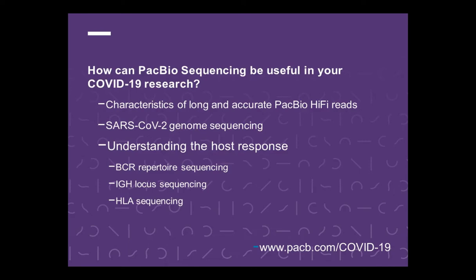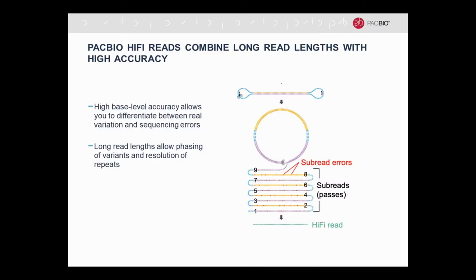How is PacBio sequencing potentially helpful in your COVID-19 research? I want to start out by describing some of the unique qualities of PacBio HiFi reads, and then go into more details about how those qualities will be useful in different types of applications, including SARS-CoV-2 genome sequencing and understanding the host response to infection. Some of the topics I'll discuss are BCR receptor sequencing, IGH locus sequencing, and HLA sequencing. PacBio is unique in that we are able to produce not only long reads, but long reads that have very high accuracy, which is quite well differentiated from the other sequencing options available.